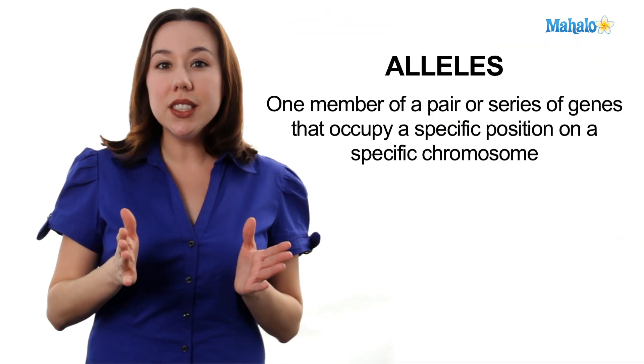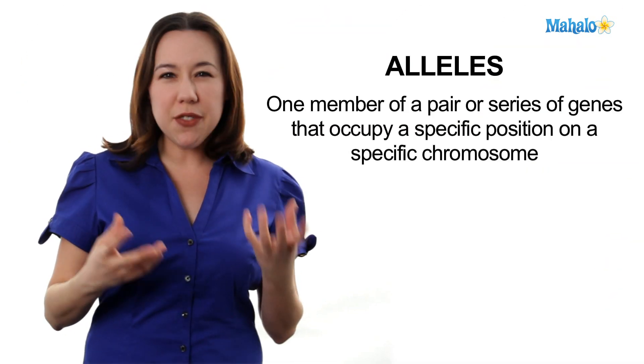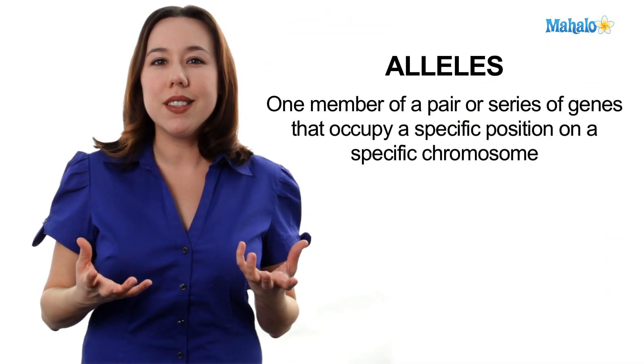Now, before we get started and jumping into our Punnett square problems, let's set down some ground rules. First, we're going to talk about alleles. Alleles are going to be like different flavors of genes.